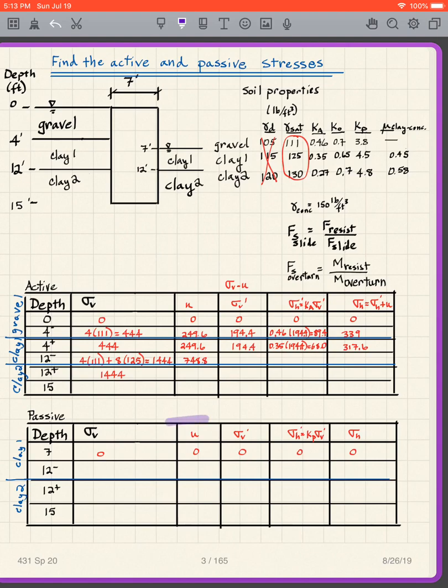And then what do I know? I know that my sigma h is sigma h prime plus u. So I add those two columns together. And then you need to do the passive zone also. And I will let you fill that out. So just remember that when you're using, when you're in the passive zone, we want to use the KP values over here. So use the KP values.